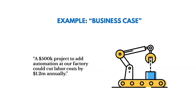Here's an example of a simple business case — for a factory automation project. A $500,000 project to add automation in our factory could cut labor costs by $1.2 million annually. This project is short-term and only costs $500,000, but each year it's expected to cut labor costs by $1.2 million. We may want to compare that benefit and cost to other projects if we're deciding between several options, but this business case is going to help us determine if this is a project we should move forward with. The business case is an input to the development of the project charter.